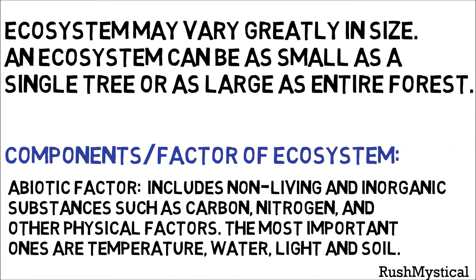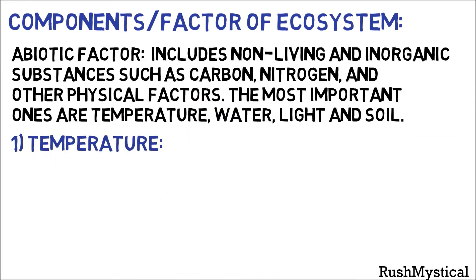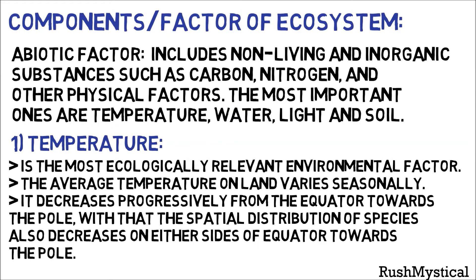The first component is abiotic factors. Abiotic factors include non-living and inorganic substances such as carbon, nitrogen, and other physical factors. The most important ones are temperature, water, light, and soil. Temperature is the most ecologically relevant environmental factor. The average temperature on land varies seasonally and decreases progressively from the equator towards the poles, with the distribution of species also decreasing towards the poles.